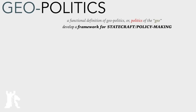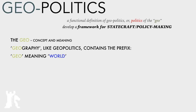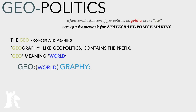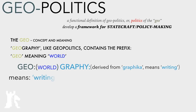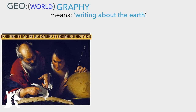To begin, we are going to work towards developing a functional definition of geopolitics — or the politics of the geo — and this definition will help us develop a framework for statecraft and policy making, which is our overarching goal. The 'geo' in geopolitics is derived from the Greek word Gaia, which was the goddess of the earth in Greek mythology. Geo therefore means 'world,' and when we put geo as a prefix to 'geography,' the suffix 'graphi' is derived from the Greek word 'graphica,' meaning writing.